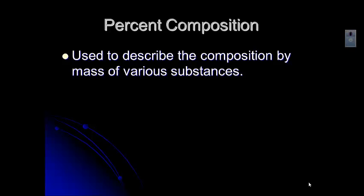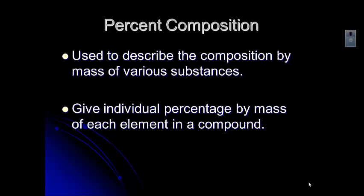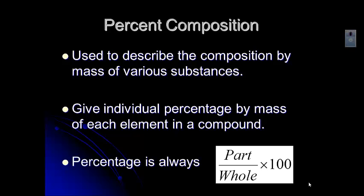And it's actually really useful information if you want to know what something is made of, if you're investigating something like a forensic scientist, you can get a lot of information by determining the percent composition. What we want to do is give the individual percentage by mass of each element in a compound. Remember, percentage is always the part we're interested in over the whole thing, and then we multiply by 100. So if a compound has oxygen in it, we can figure out the percent oxygen or the percent calcium. To find that percentage, we just look at that part that we care about over the whole thing.